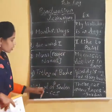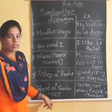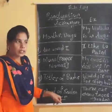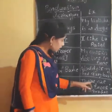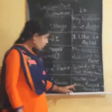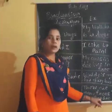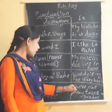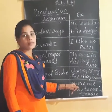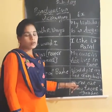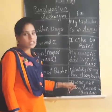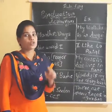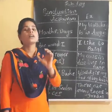The fifth acronym is S — start of sentences. The starting letter of a sentence should be in a capital. For example: 'There are many trees in the garden.' The first letter of whichever sentence you write should be in a capital.